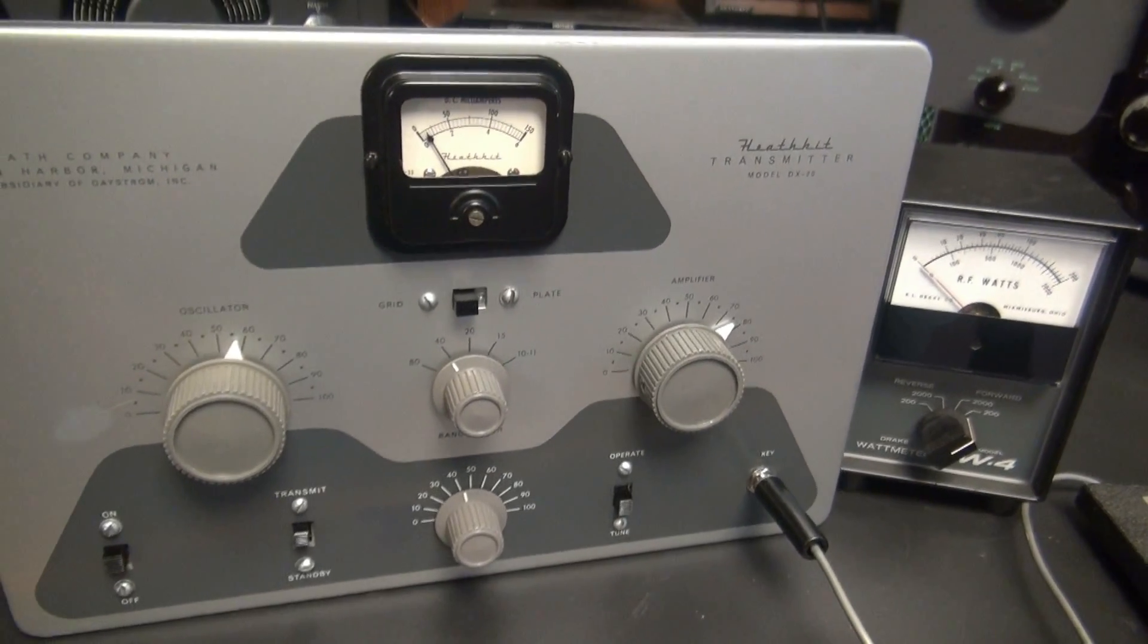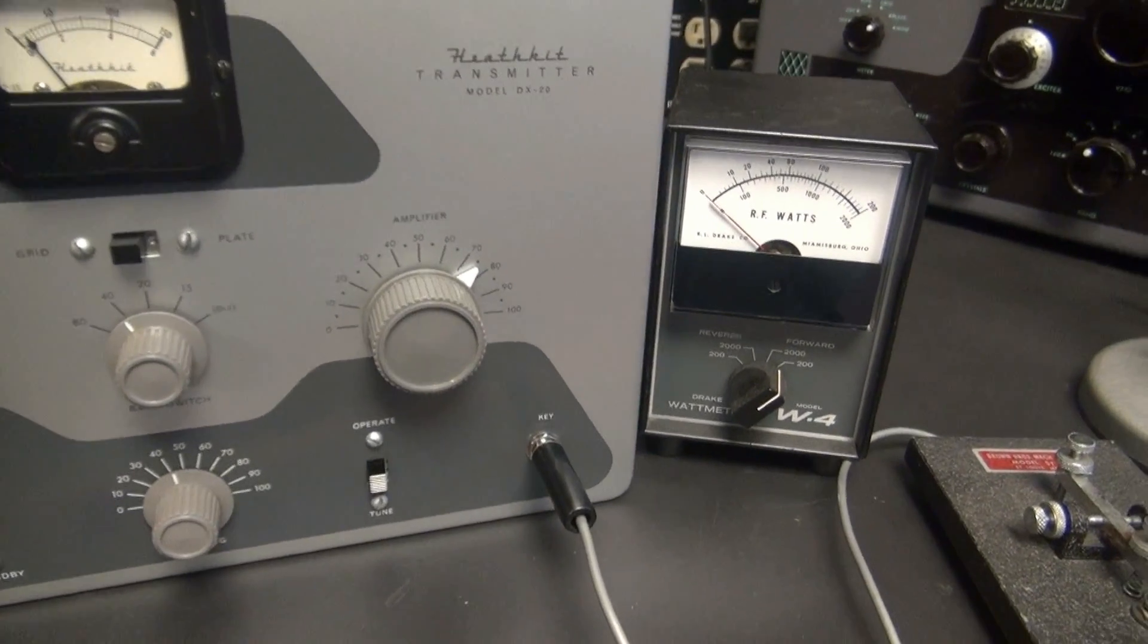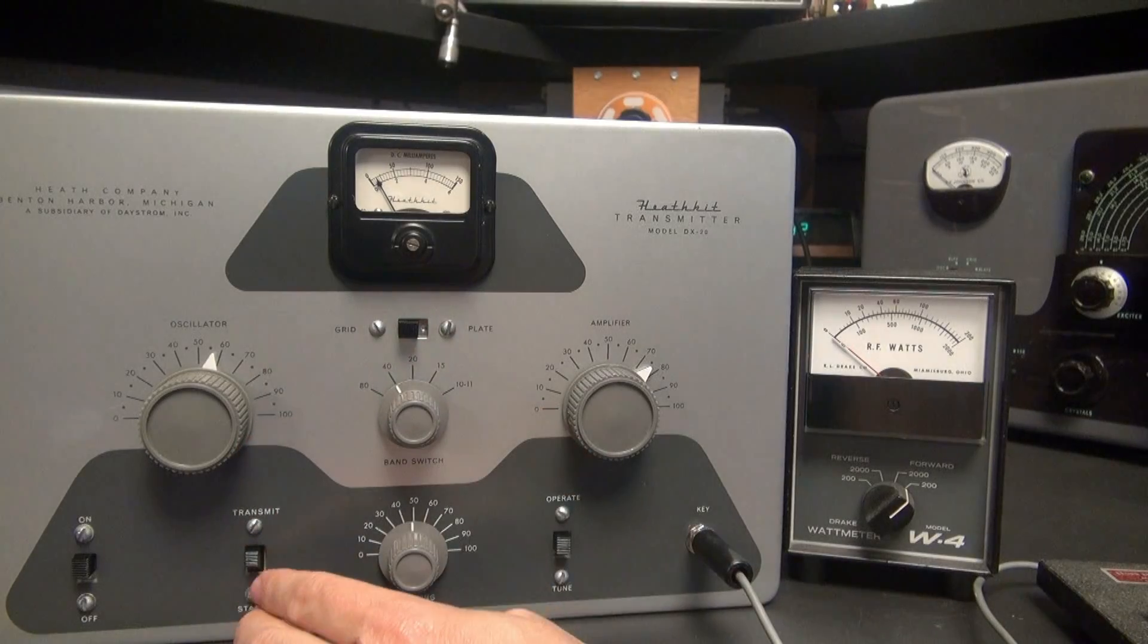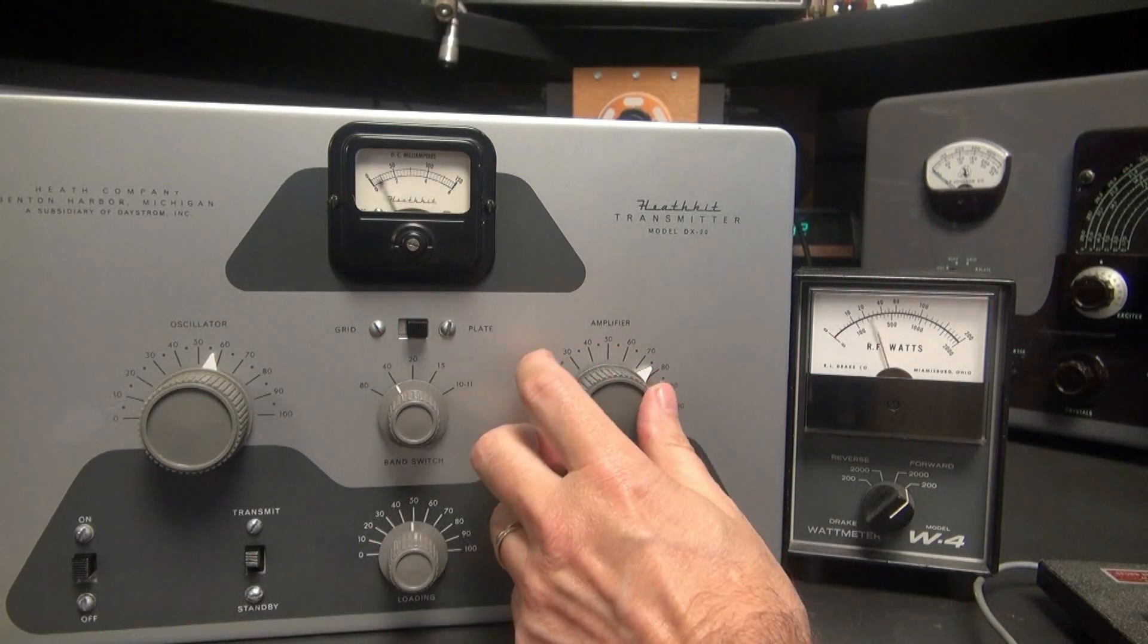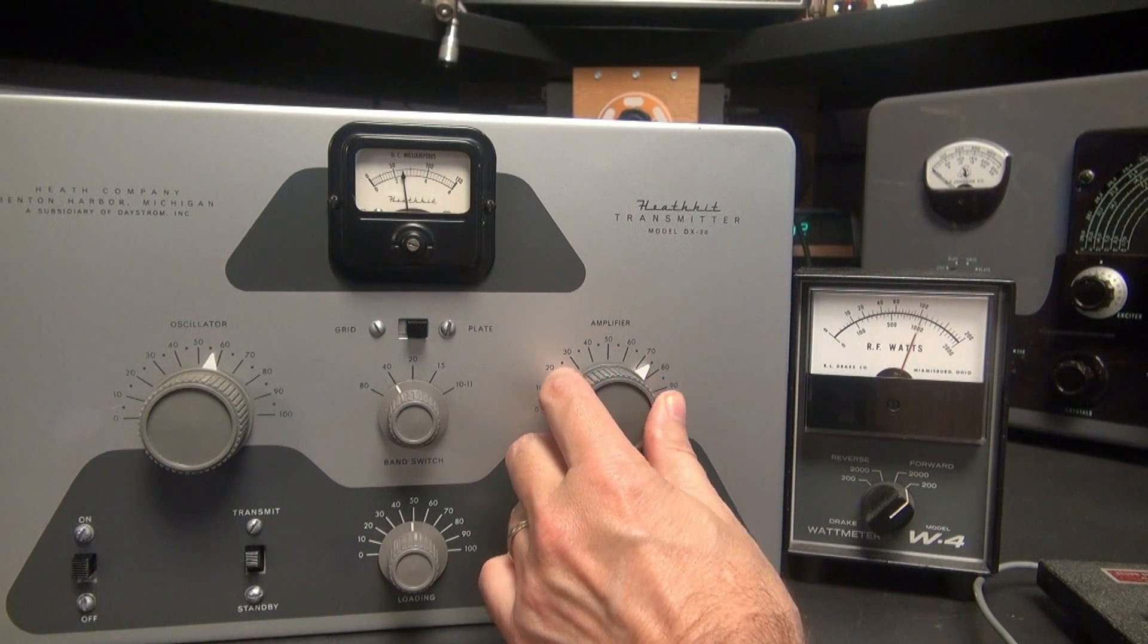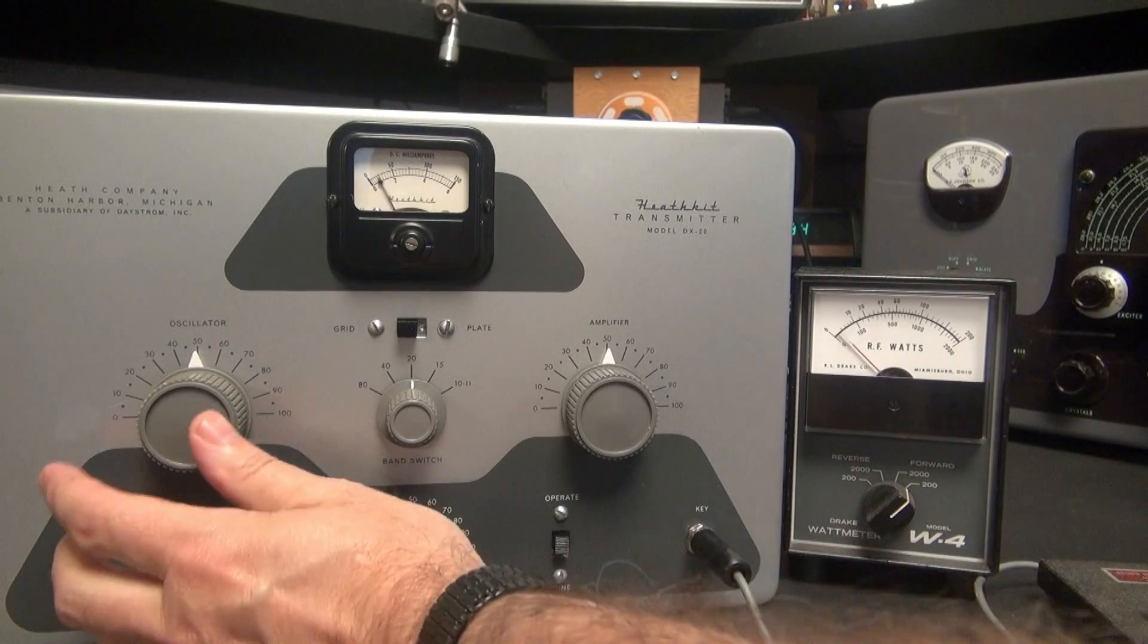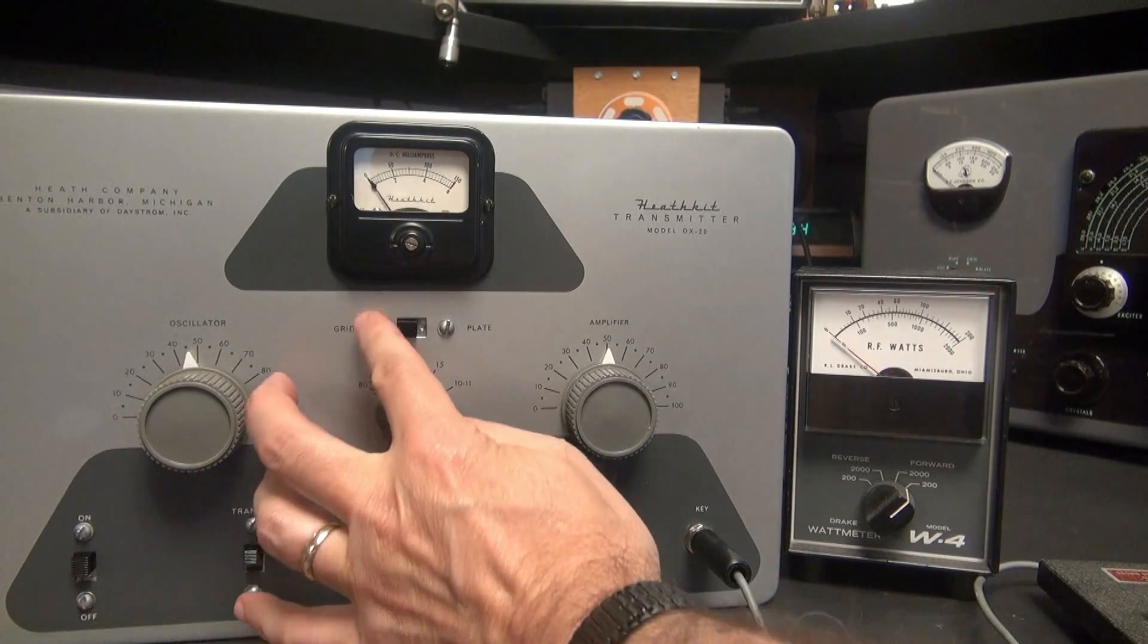Alright. So here's the final check out of the DX20 transmitter after repair. Into a dummy load through a Drake W4 meter. Little key there. We're going to listen on an NC303. So here's the 40 meter band. Here's my grid. Here's my plate. Let's power out. 20 meter band. Grid. Plenty to spare. Plate.